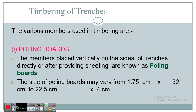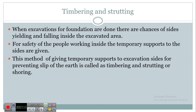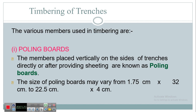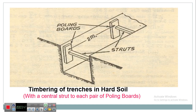Timbering of excavation can be done in the following ways: stay bracing, box sheeting, vertical sheeting, and runner system, and sheet piling also. For these systems we need some components. The first member is the polling board — members placed vertically on the side of trenches, directly providing sheeting, are known as polling boards. Their size may vary from 1.75 cm to 32 cm, and 4 cm by 4 cm. In the image you can see the polling boards used in timbering.